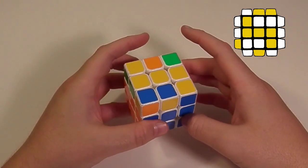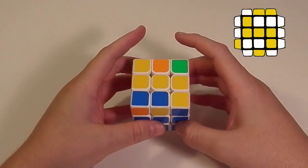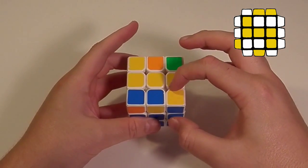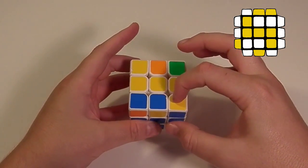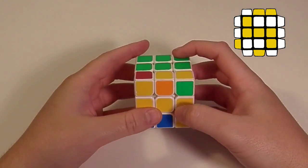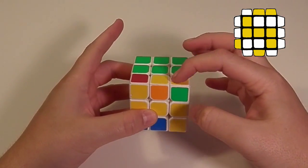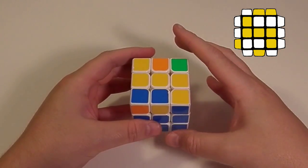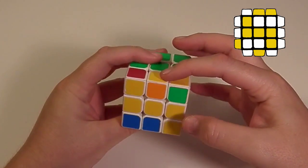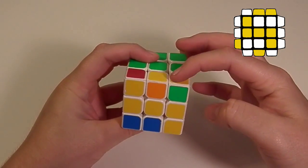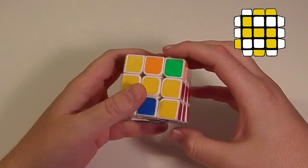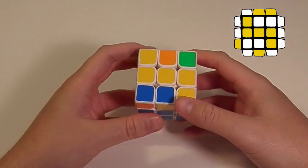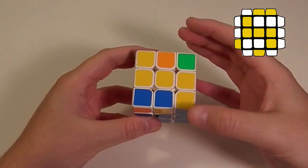Now the way I recognize OLL number 40, or Anti-Fung, is I see this shape oriented on the top of the cube, and then on the back there are two pieces facing away. So, a trick to distinguishing between Anti-Fung and Fung is when you have these two pieces on the back of your cube, whichever side they're on, that's the hand that you start with. So in this case, you're going to be using your right hand.